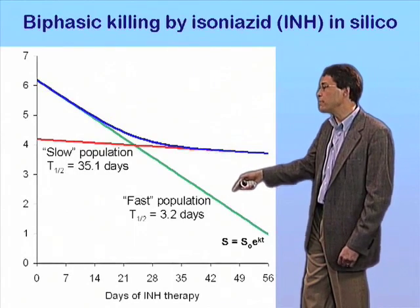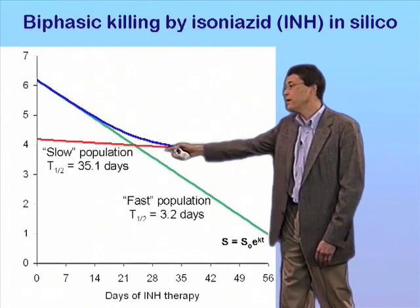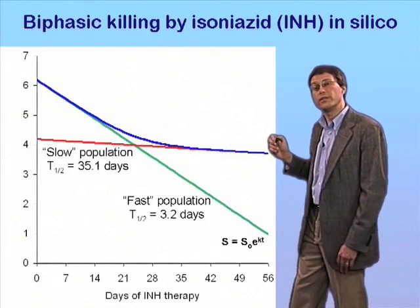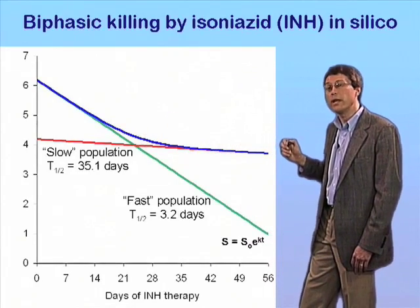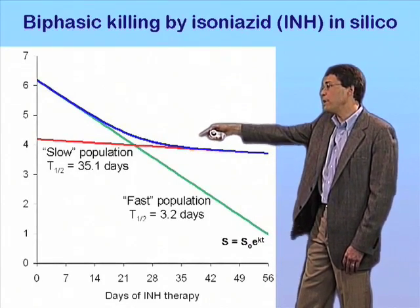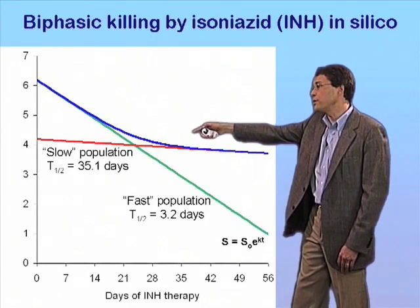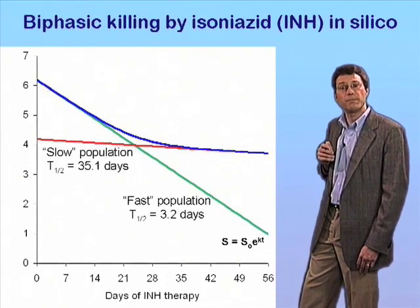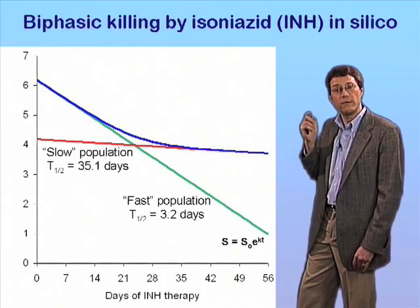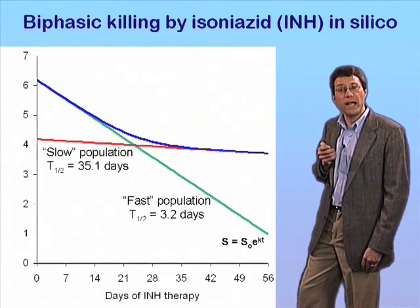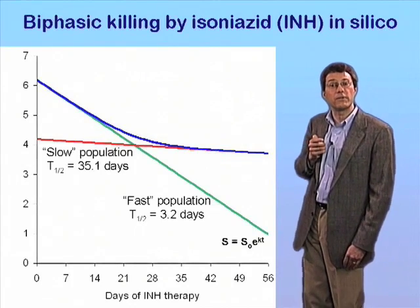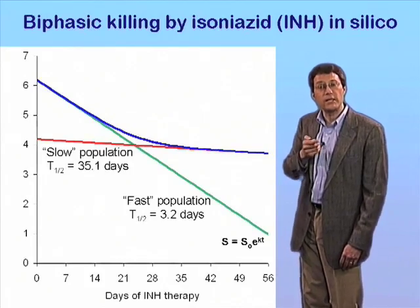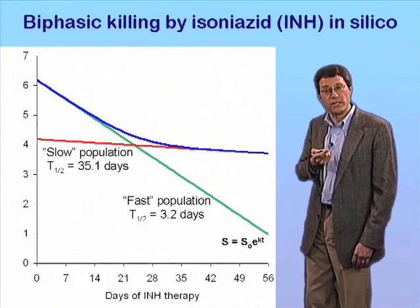maybe 99.9% of the bacterial population, versus a slow population, the persisters, that's killed with very slow kinetics — and then calculate the composite of these two curves, as shown by the blue line here — what we get is an almost perfect match to the experimental data. The fact that a model matches the experimental data does not prove that it is true, but it at least says that the idea is plausible.